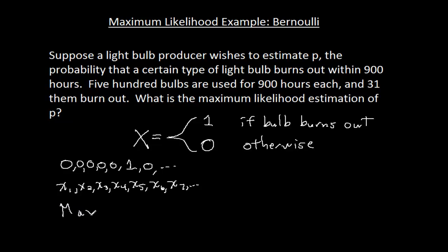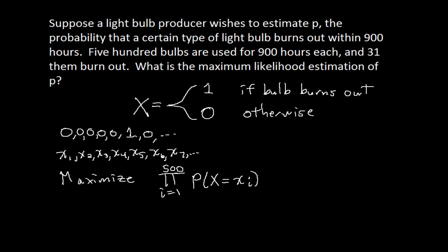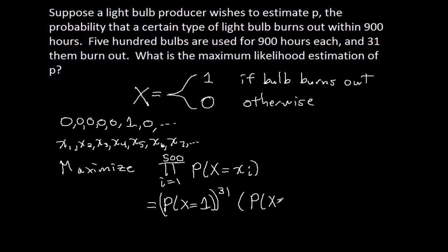Maximum likelihood estimation says that we maximize the product from i equals 1 to n — in this case 500 because we did 500 observations — of the probability that the random variable X equals little xi, which is what we actually saw happen. 31 of the bulbs burned out, meaning 469 did not. So we're going to have the probability that X equals 1 to the power of 31, and the probability that X equals 0 to the power of 469.